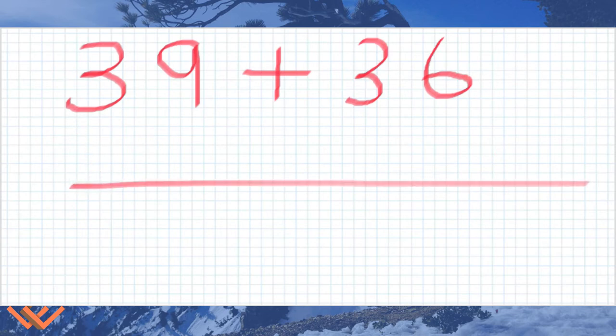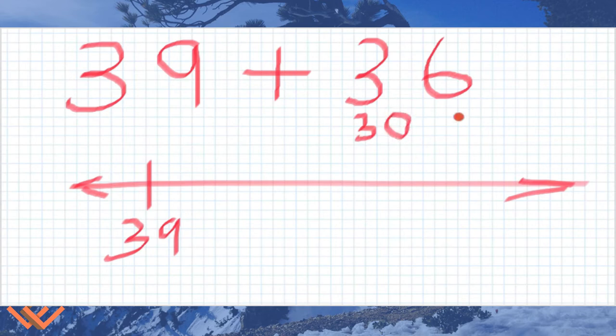So let's do a number line. I like number lines. Let's do an arrow there. Arrow. We're going to start at 39. Okay, see what I did there? So we started at 39. Now let's take a look at what we have here. So this is actually 30 plus 6, or we can say it's 3 tens.